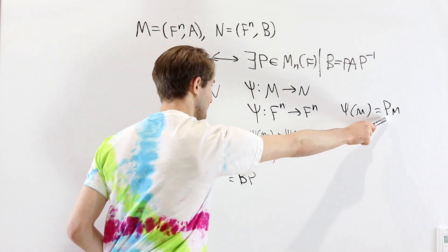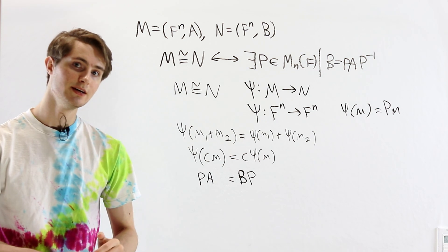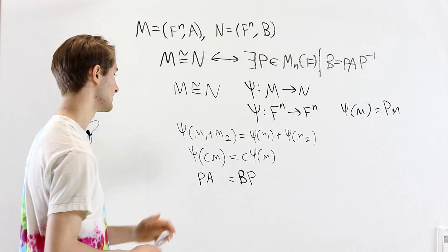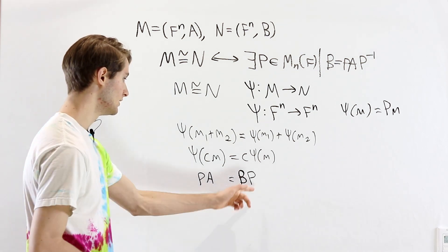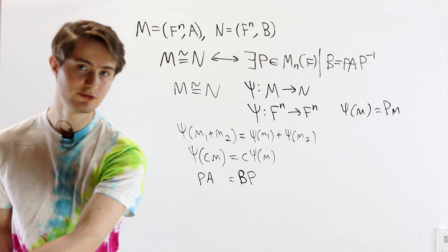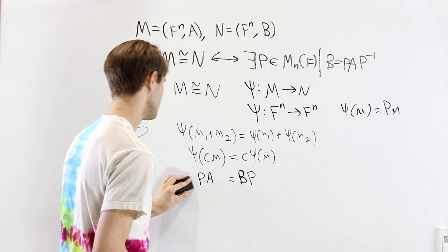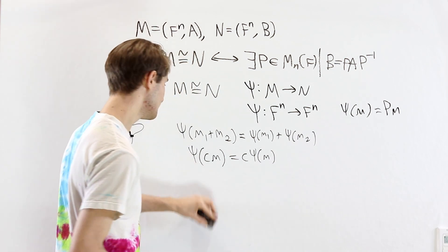So if ψ is described by this matrix P, P is also going to have a two-sided inverse. So let's multiply by P inverse on the right side of this equation.